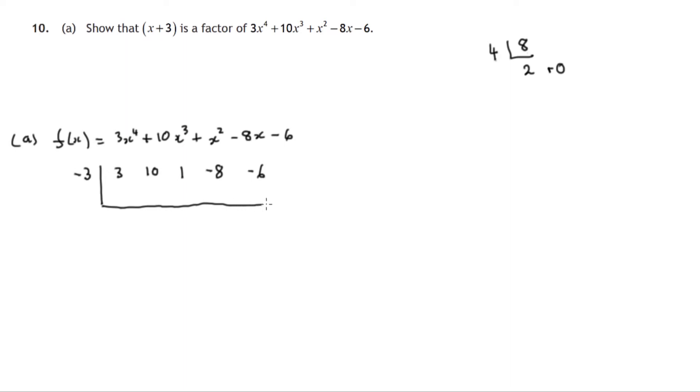And the procedure we use, which you'll be familiar with: bring down the 3, multiply 3 and the negative 3, then add these two terms together, multiply the 1 and the negative 3, add these two terms, multiply the negative 2 and the negative 3 together, add these two terms, and we get 0.